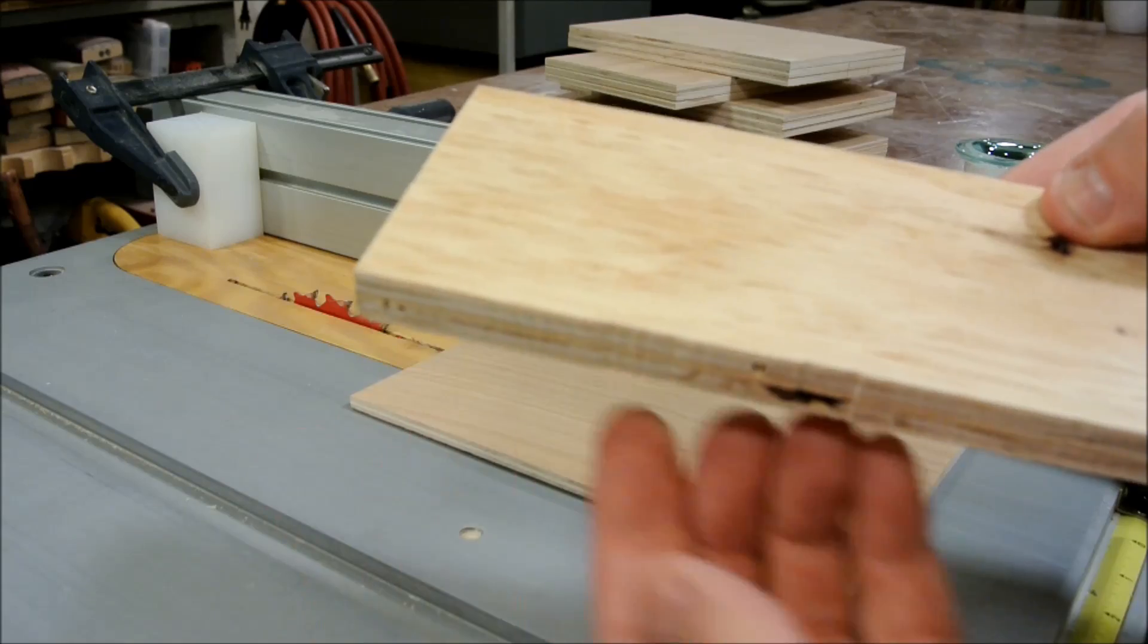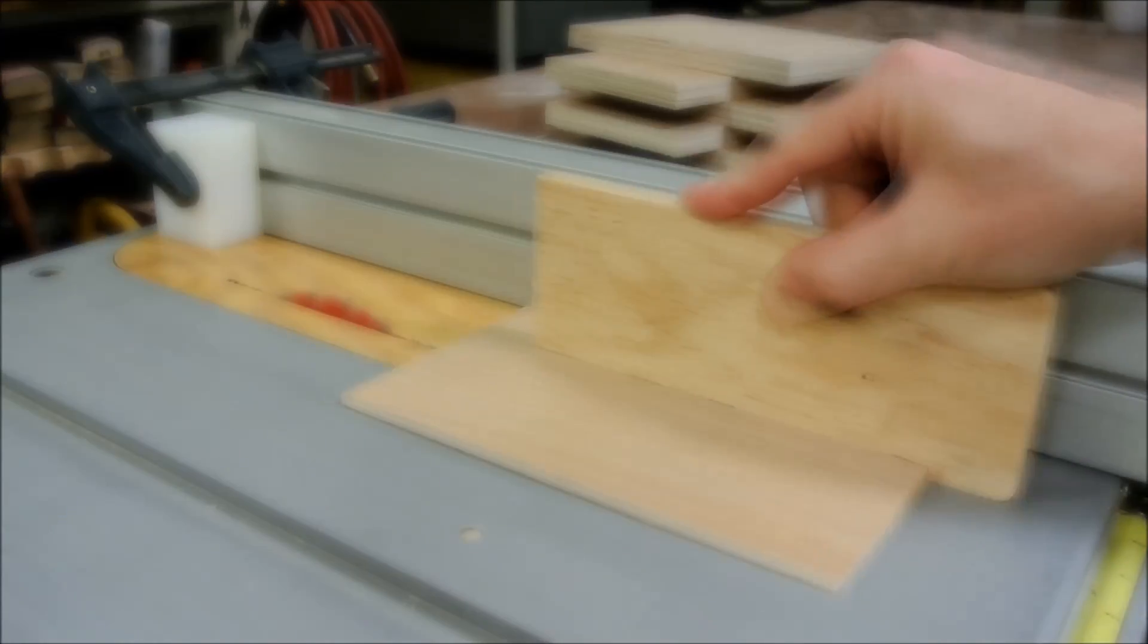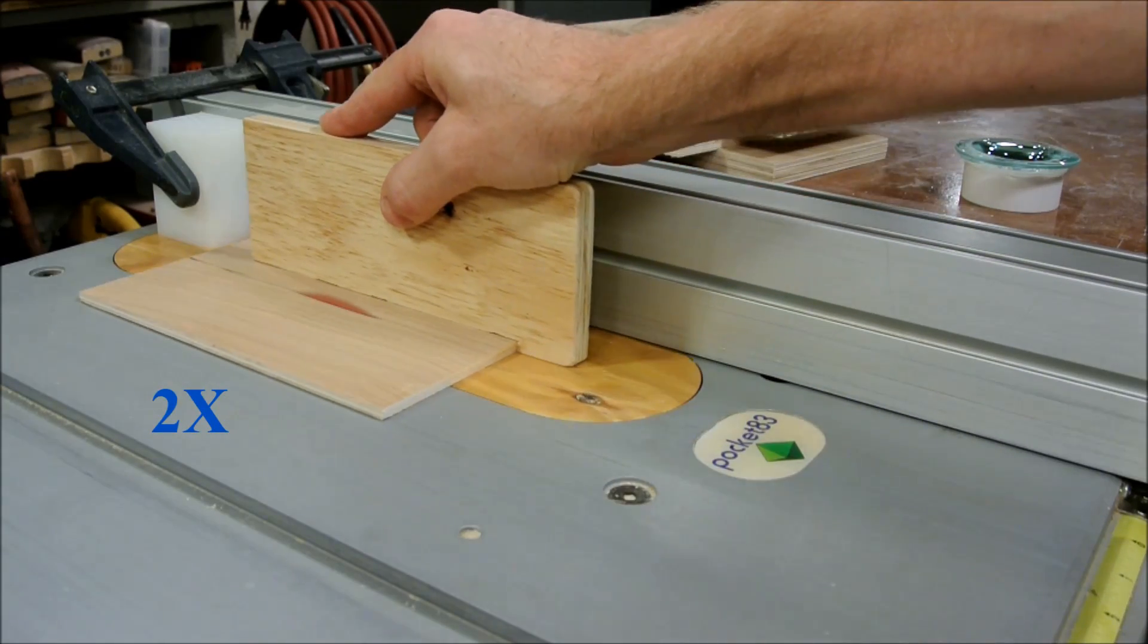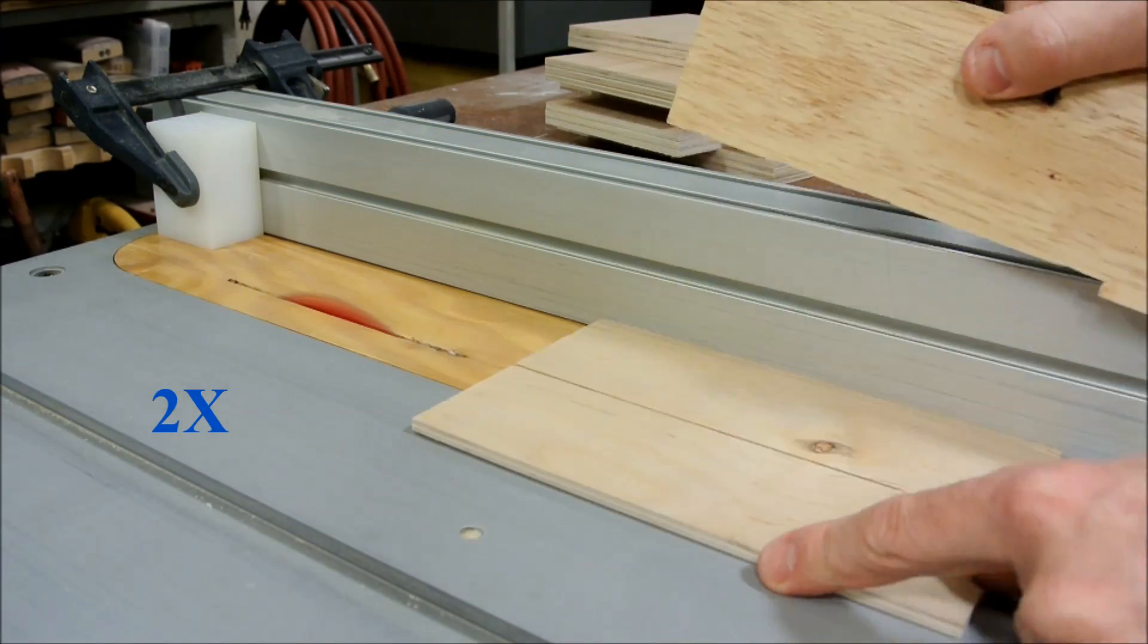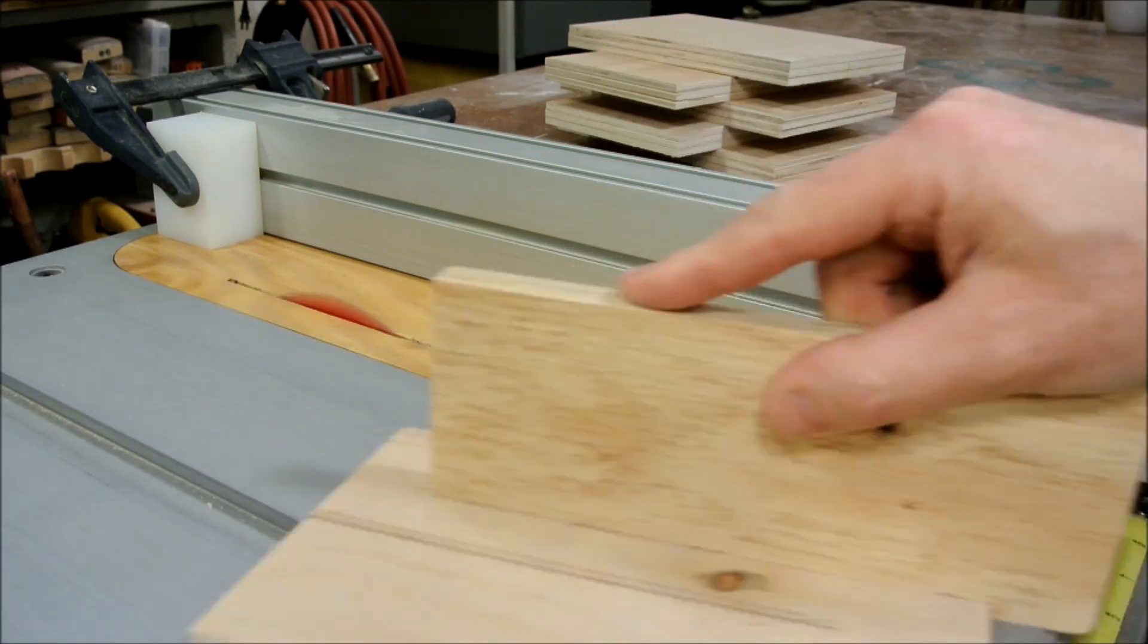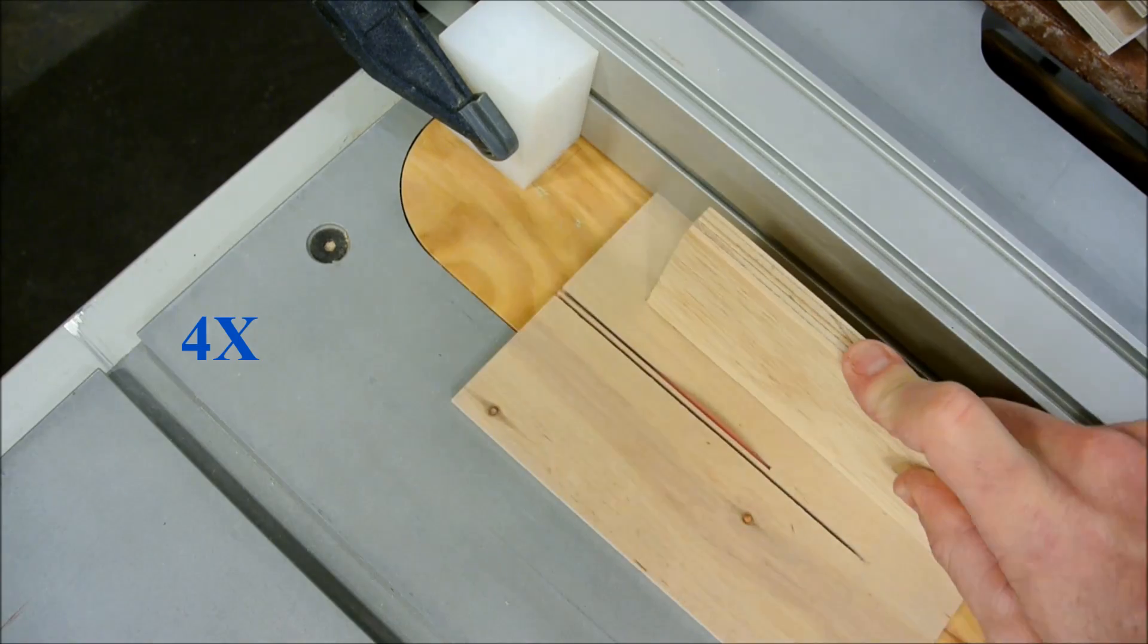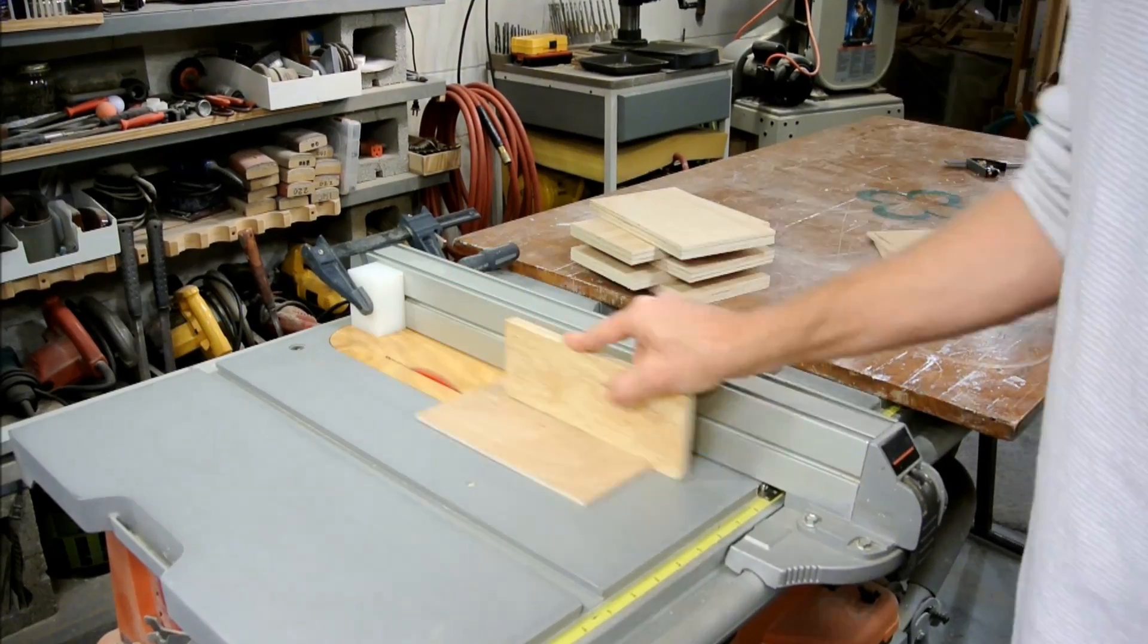Here we go. A stop has been set to keep me from cutting too far, and flipping the piece over ensures that each part is perfectly symmetrical. Now I'm set up to batch these out quickly and easily.